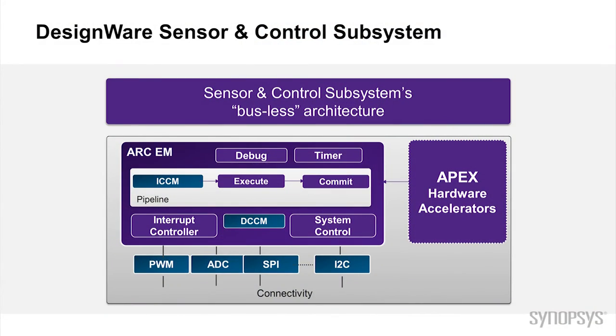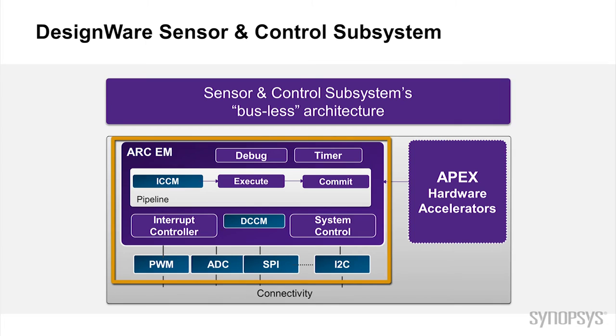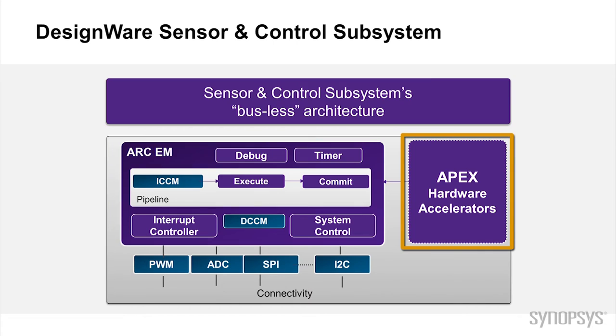And how are all these tied together? Integration becomes an important part as well. Beyond the IP offerings, we have subsystem offerings — in particular our sensor and control subsystem. These not only integrate tightly coupled memories and serial peripherals such as SPI and I2C, they add hardware acceleration to the system, and they also accommodate additional integrations such as our EEPROM products and data converter products that can be tightly coupled to these subsystems.